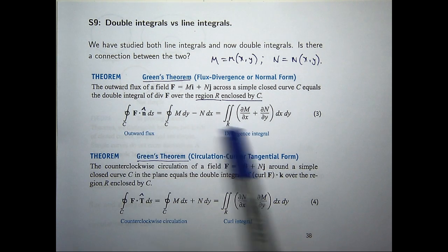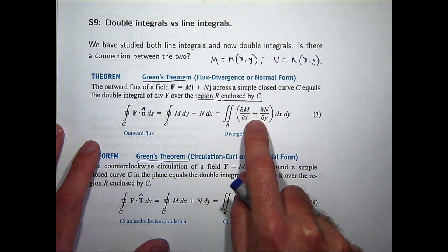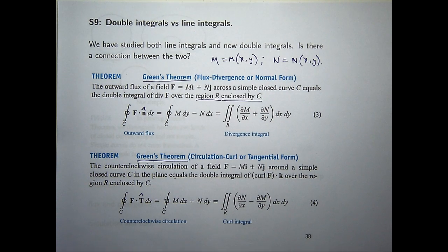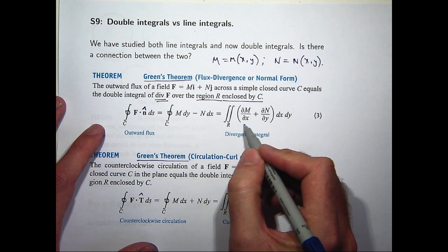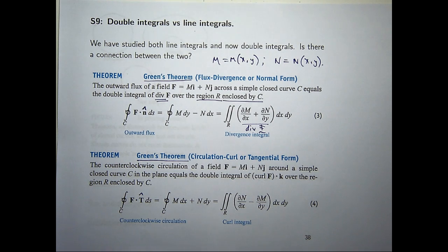You can see equation three relates the outward flux. This line integral here is just the double integral of this special integrand. Now, if you look closely, what is this integrand? If that's my f, what is this integrand? It's the divergence. The divergence. So this is just the divergence. So the first form of Green's Theorem gives you a relationship between line integrals and double integrals, but also a relationship between divergence and flux, outward flux.